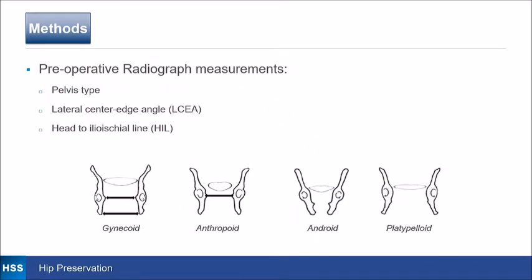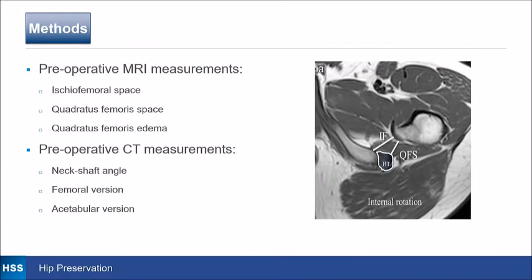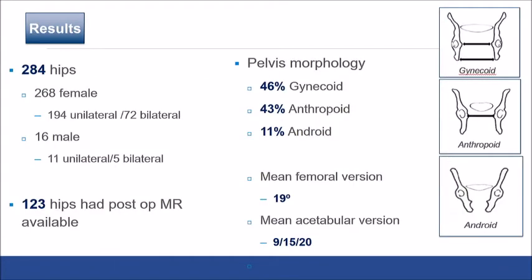We looked at pelvis types, lateral center edge angle, and head-to-ilioischial line. Our fellow now knows everything in the OB-GYN literature about pelvises. We measured the ischial femoral space, quadratus femoris space, and presence of quadratus femoris edema on preoperative MRI, and looked at CT measurements including neck shaft angle, femoral version, and acetabular version.